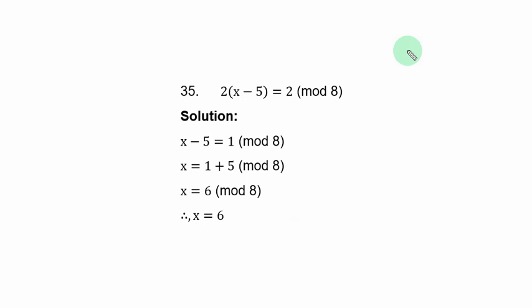Example 35. We have 2 bracket open x minus 5 bracket close equal to 2 modulo 8. If you don't wish to open the bracket on the left-hand side, you can also divide through by 2. Because I'm trying to look at these 2 here and these 2. If you divide through by 2 first, we are left with x minus 5 equal to 1 modulo 8.